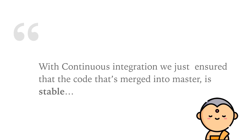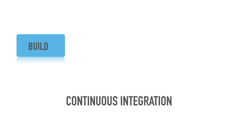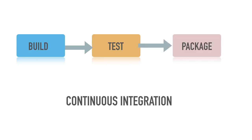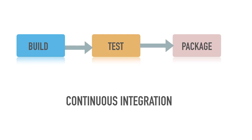This is what I believe would have happened in one of the agile organizations. Since continuous integration helped a lot, one of the nerds probably thought: why don't we extend it to everything else? Continuous integration is typically used for running compilation, builds, and tests — including unit, integration, and acceptance tests — and also to package artifacts and push them to some artifact management system.